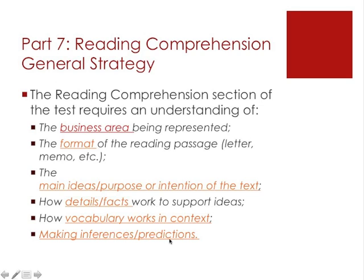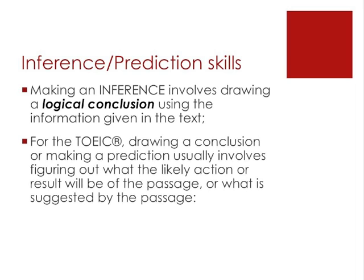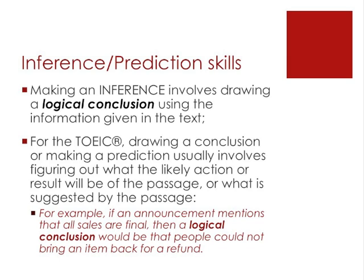Making an inference refers to how to draw a logical conclusion using the information we're given in the text. These questions ask things such as what will likely happen or possibly happen — what will be the result of a particular action, or what is suggested by the passage. For example, if you see an announcement that mentions 'all sales are final,' a logical conclusion would be that people could not bring the item back for a refund. It may not tell us this directly, so we have to logically conclude it. Even though the TOEIC does not include a lot of inference questions, we do have to be prepared to draw a conclusion from the information given.